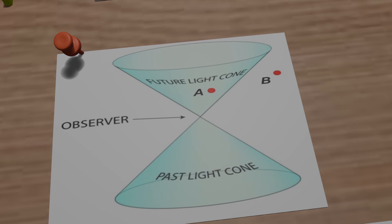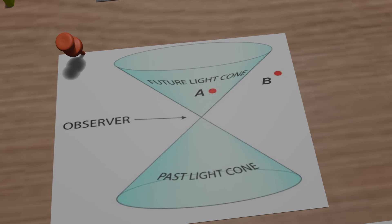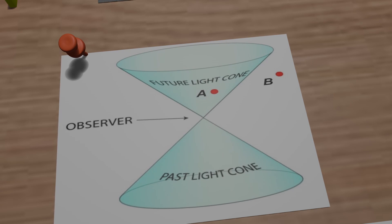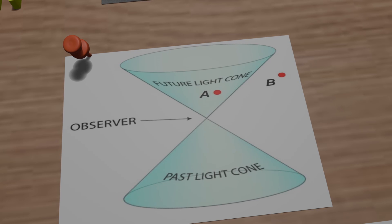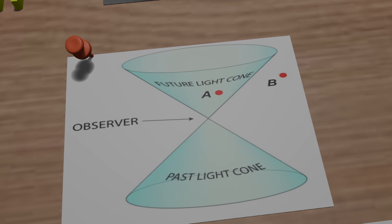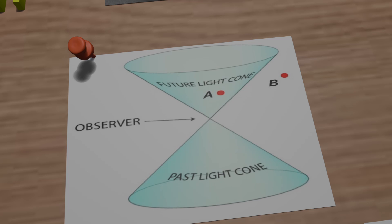For a long time, these loopholes created uncertainty about whether experimental results were truly confirming quantum mechanics, or if they could be explained by classical physics. But in recent years, experiments have closed some of these loopholes.